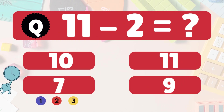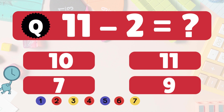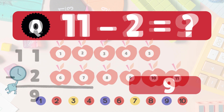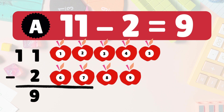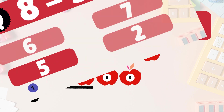11 minus 2 is 9. Here we have 11 apples. Take 2 away. 9 apples left: 1, 2, 3, 4, 5, 6, 7, 8, 9. So 11 minus 2 is 9. You're on fire!